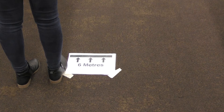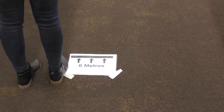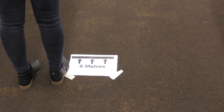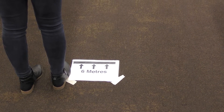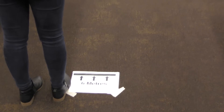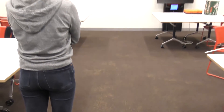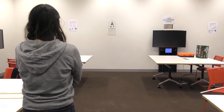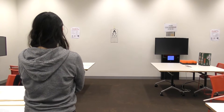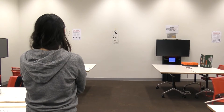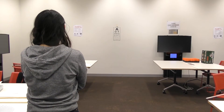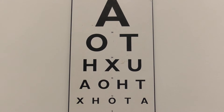To carry out this test at home, make a mark on the floor at the distance required for the size of chart that you're using. The example shown in this video uses a chart that needs to be read at 6 meters, so we put a mark at 6 meters on the floor.